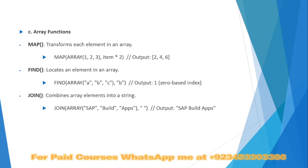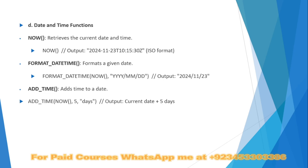For example, when finding the character 'b' in the array ['f', 'a', 'b'], the function locates 'b' and returns index one, because the location of 'b' is one. The JOIN function combines elements — in this format using JOIN on the array ['sap', 'build', 'apps'] the output will be 'sap build apps'.